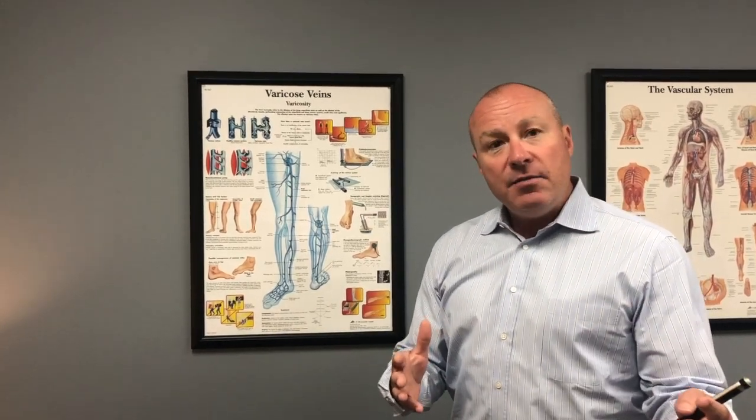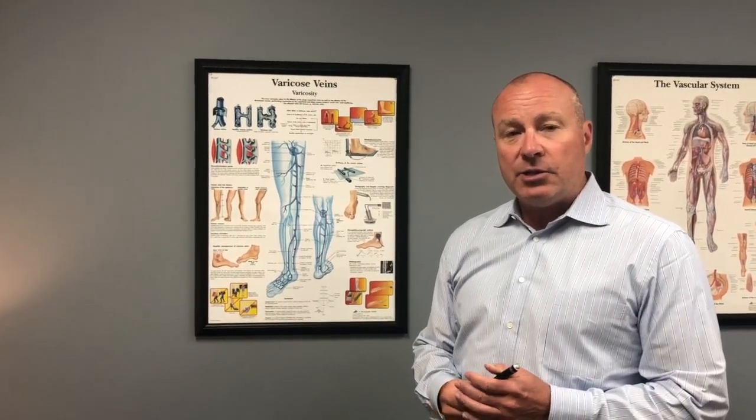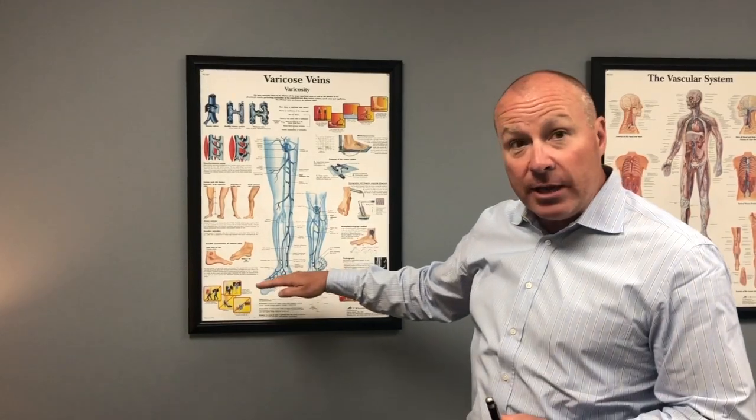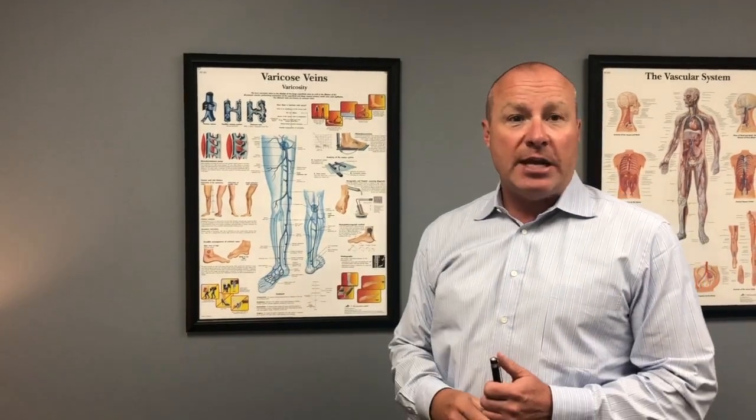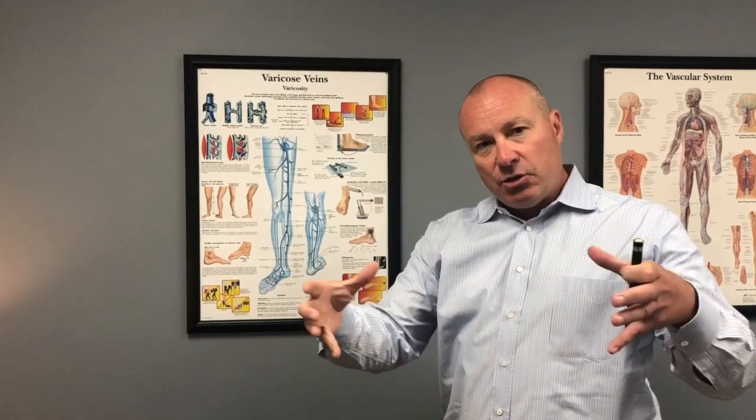The cause of varicose veins is generally genetic in nature. If you have parents or other family members that have leaky veins, you're more likely to get them. Other factors are gravity pulling blood down the legs, as well as the aging process. So the combination of genetics, time, and gravity cause the veins to stretch out, valves come apart, and blood goes the wrong way down the veins.